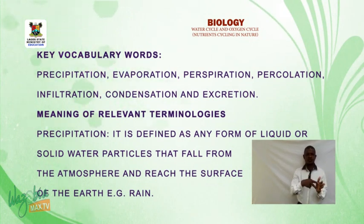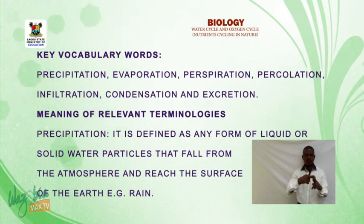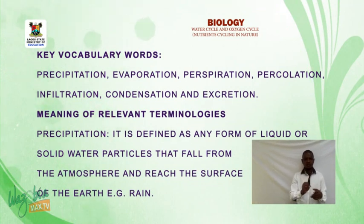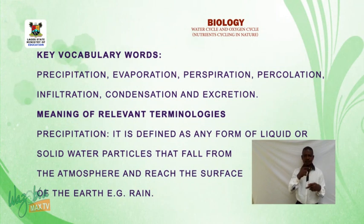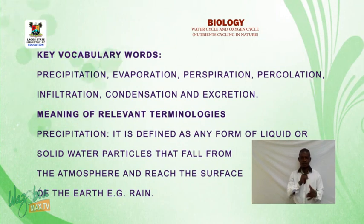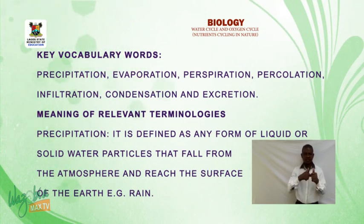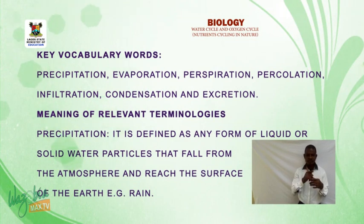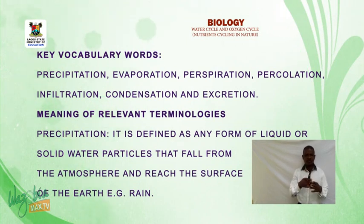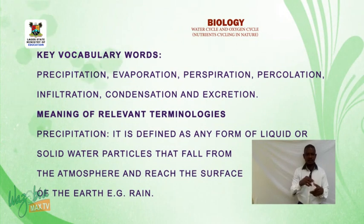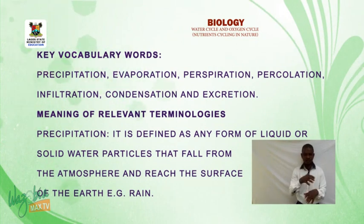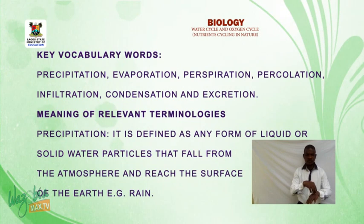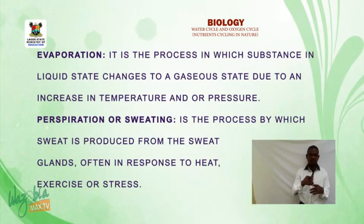Meaning of relevant terminologies. Precipitation is defined as any form of liquid or solid water particles that fall from the atmosphere and reach the surface of the earth — for example, rain.